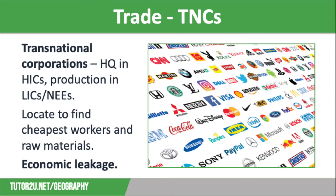Our third factor linked to trade is transnational corporations, or TNCs. TNCs often cause issues for trade. These are huge companies with offices and factories in several countries and can move around the world to find the cheapest workers and raw materials possible. This means they can produce their goods and services cheaply, making it hard for smaller businesses to compete.